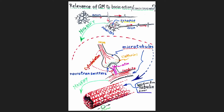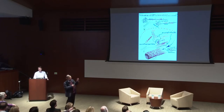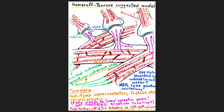Microtubules are attractive for this idea because they're tubes, they're symmetrical, and have features promising for large-scale quantum states which could hold quantum coherence long enough that the reduction of the state is something you can make use of. That's really the idea. You need them all acting in concert in order to have a big enough effect that orchestrated reduction can actually take place.